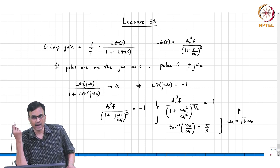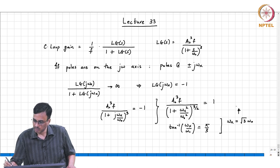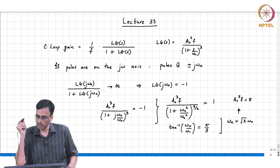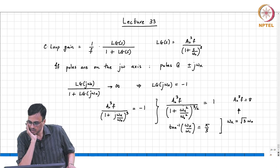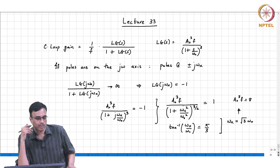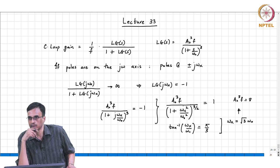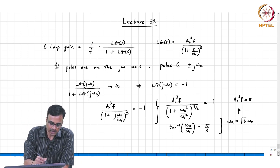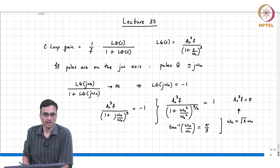The unknowns are a₀³f and ωx. With ωx = √3·ω₀, we find a₀³f = 8, because ωx²/ω₀² = 3, so 3+1 = 4, and 4^(3/2) = 8. This is exactly what we got from root locus analysis — not surprising. So one way of checking if a system is close to becoming unstable is to examine the loop gain.